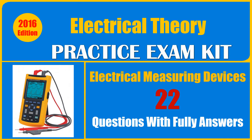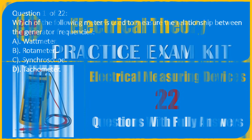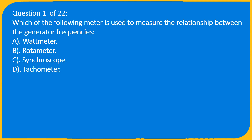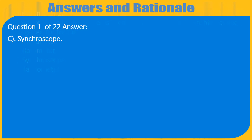Electrical Measuring Devices Quiz, 22 Questions with Full Answers. Question 1 of 22: Which of the following meters is used to measure the relationships between generator frequencies? A. Wattmeter, B. Wattmeter, C. Synchroscope, D. Tachometer. Answer: C. Synchroscope.